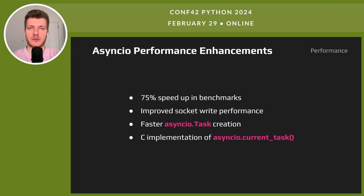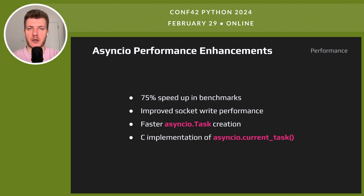Python 3.12 boosts asyncio speed significantly — benchmarks show up to a 75% increase in speed. Socket writing is now more efficient and creating async tasks is faster than before. The current_task function is now implemented in C, which alone speeds things up by 4 to 6 times. These improvements make asyncio slicker and faster, and for I/O-bound tasks this means better responsiveness.